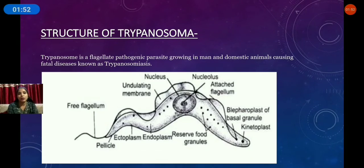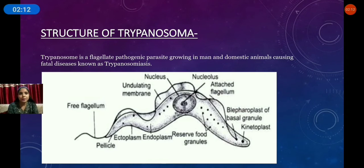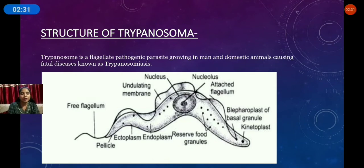The anterior end is slightly blunt and the posterior end is pointed or sharp. The anterior end has a long flagellum which is responsible for its movement. The point from which the flagellum arises is called the blepharoplast or basal granule, and there is a kinetoplast present here. There are some round structures called reserve food granules.